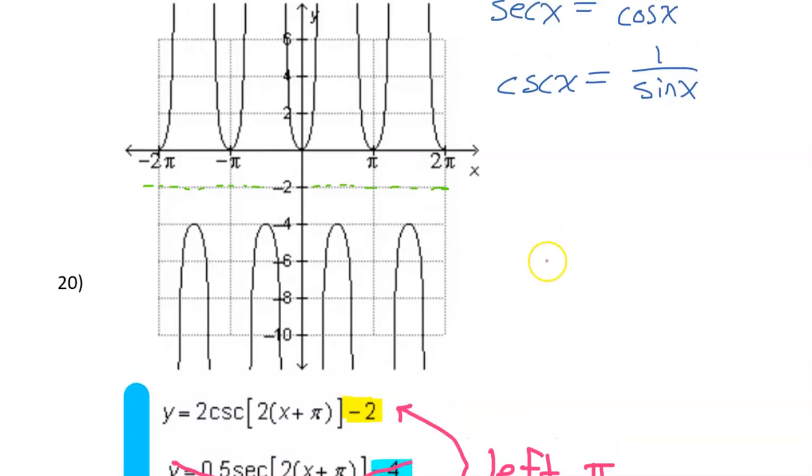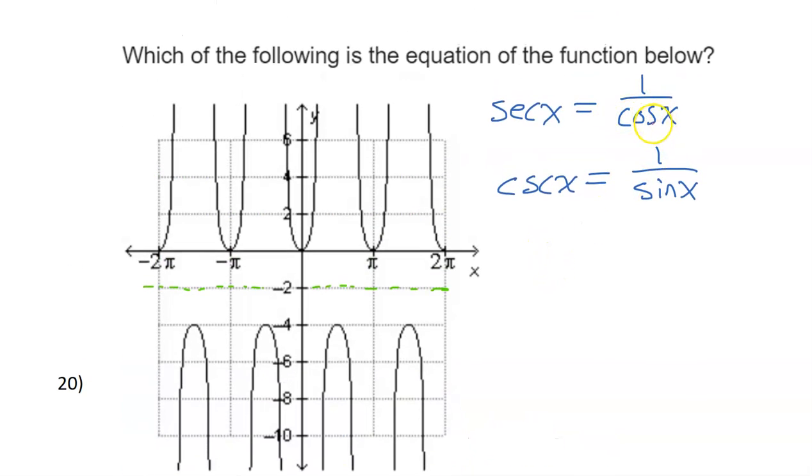So here's the thing. If I were to graph a cosine function, the parent function for cosine looks like this. Cosine starts off up high, and then it goes low, and then it goes back to high again. So this is what y equals cosine x would look like.